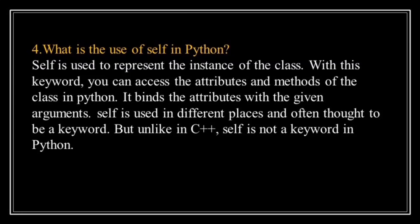What is the use of 'self' in Python? Self is used to represent an instance of a class. With this keyword, you can access the attributes and methods of the class in Python. Self is used in different places and is often thought to be a keyword. But unlike in C++, self is not a keyword in Python. Always remember that self is the first parameter of any instance method in a class.